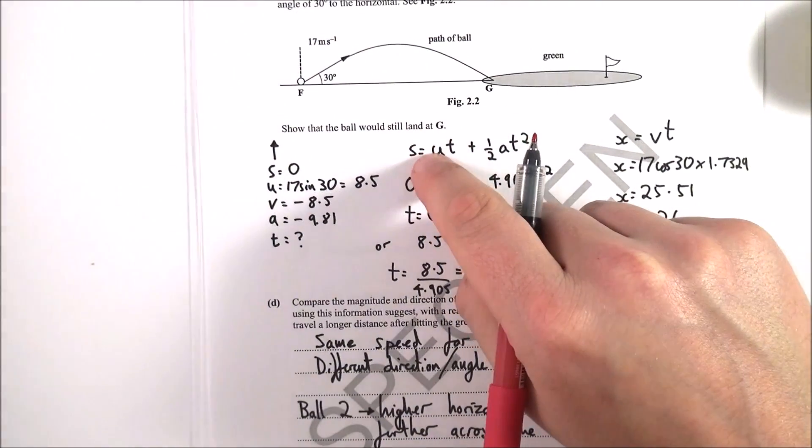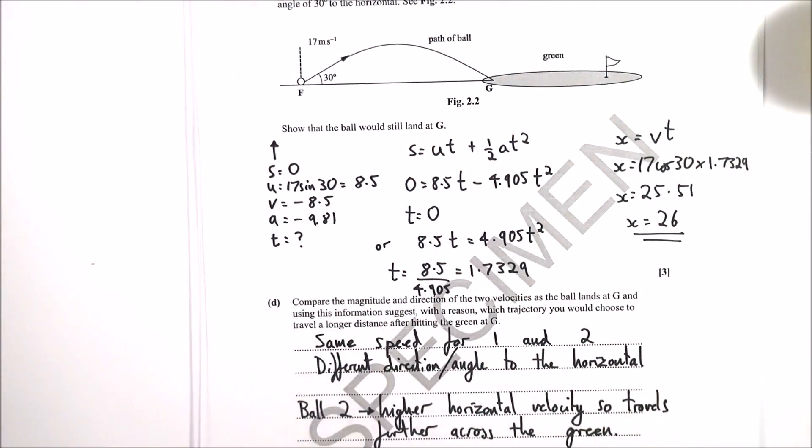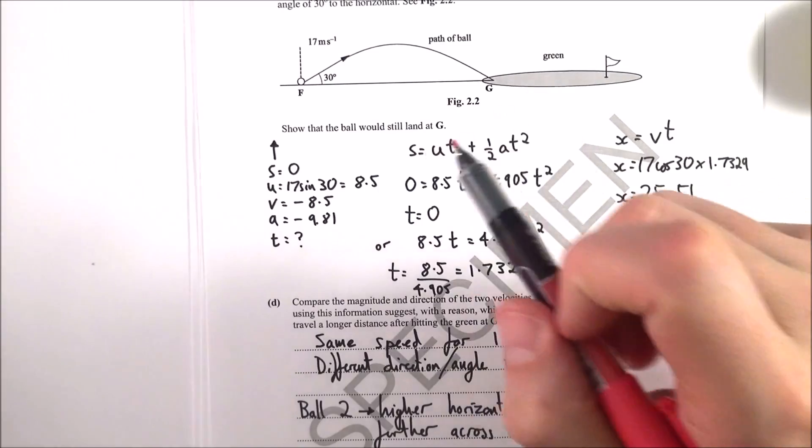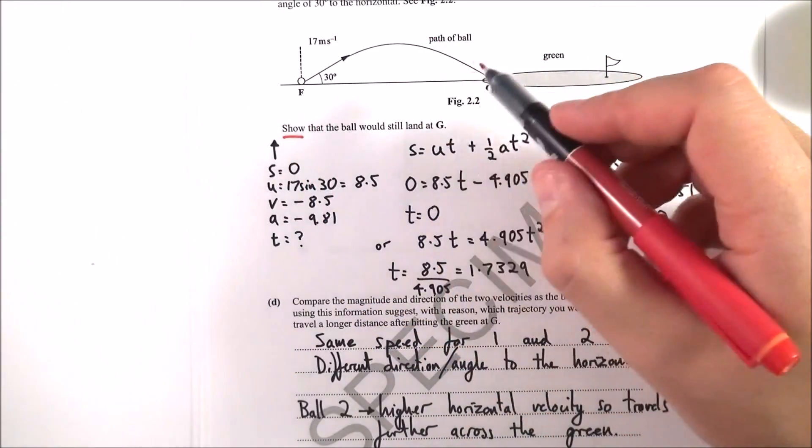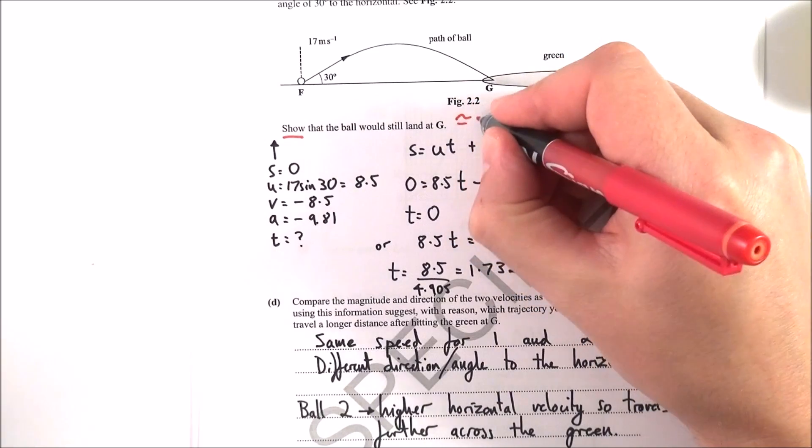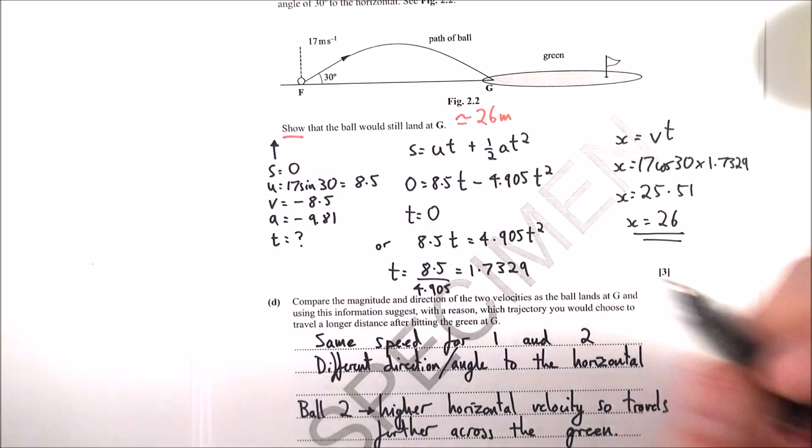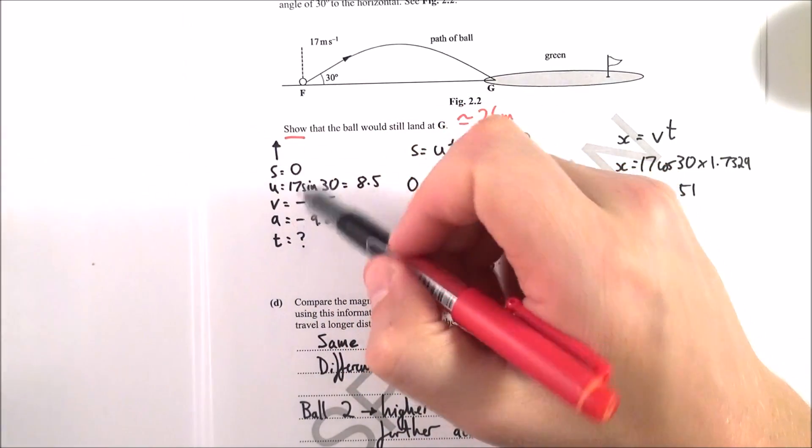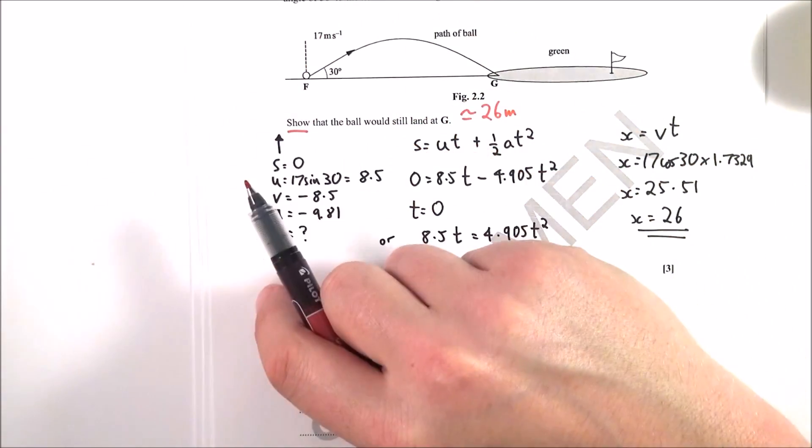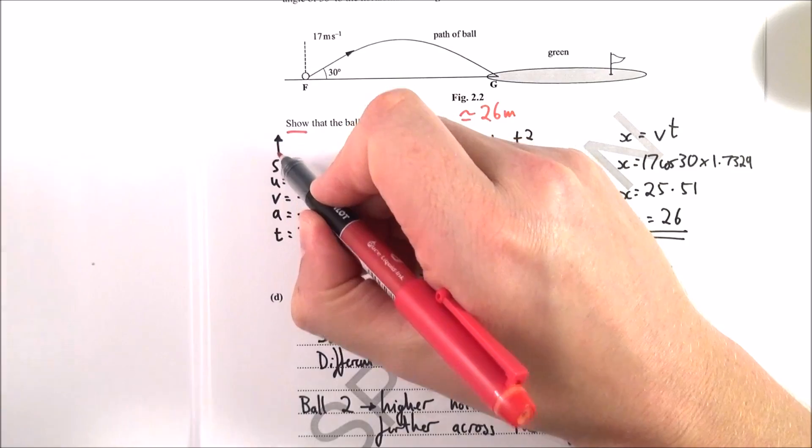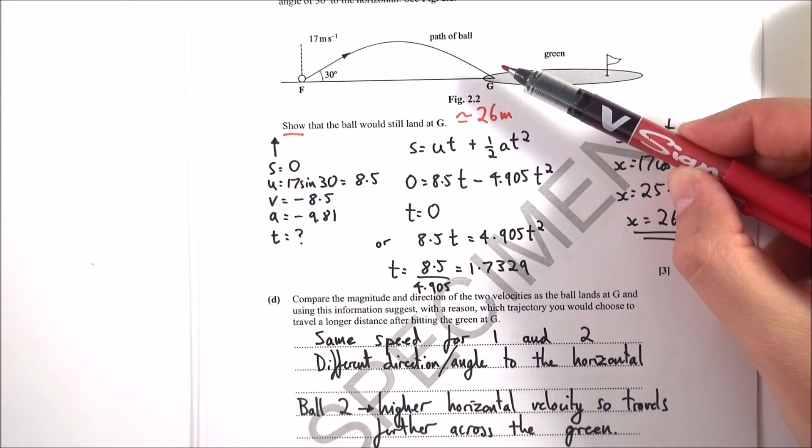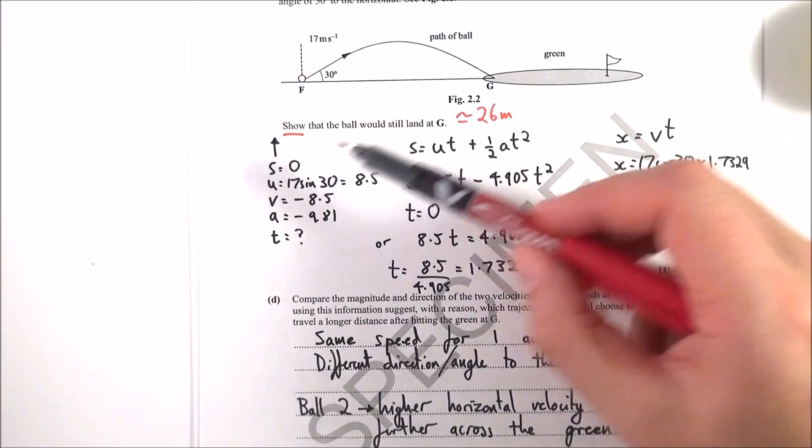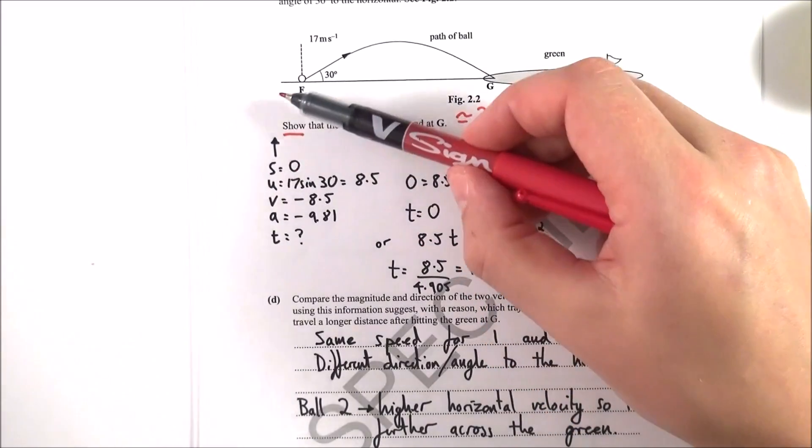Part C I thought was quite a lot of work to do for three marks. What we needed to do was basically show that the ball would still land at G, and therefore we needed to show that the distance was approximately equal to 26 meters. So what I did was I looked at SUVAT again—it's a motion question, so I wrote down SUVAT. In this case, just my arrow here shows that's in the vertical direction.